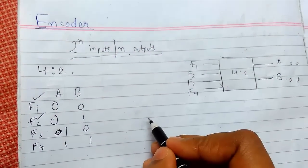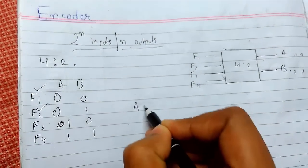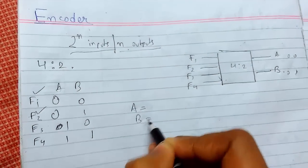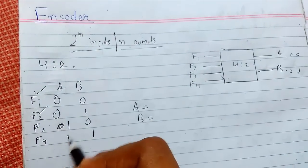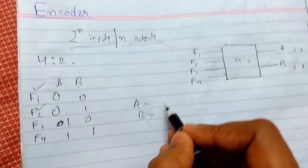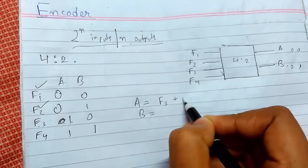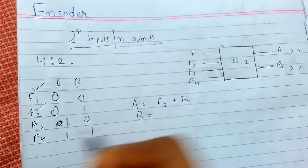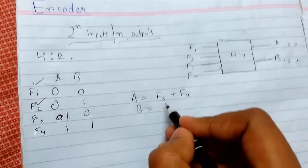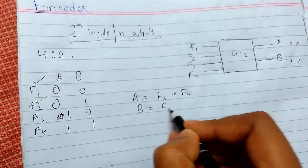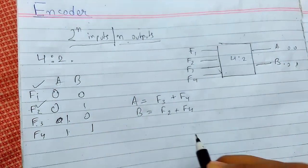Now we need to find the expression for our outputs. To do that, we will find the minterms. So output a will be f3 plus f4, because that is the combination of 1s that give the output, and for b it will be f2 plus f4.